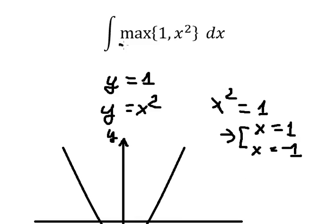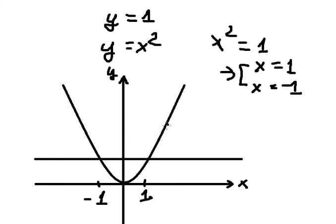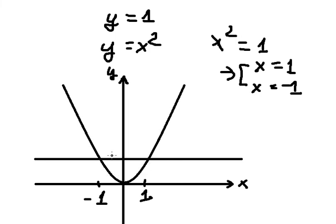Now looking at the question, if we look carefully at the region where x is greater than 1, we see that x squared is bigger than 1. From negative 1 to positive 1, the line y equals to 1 is bigger than the value of y equals to x squared. So 1 is bigger than x squared in that region. So the area between negative 1 and positive 1 corresponds to the function 1.